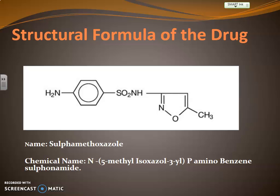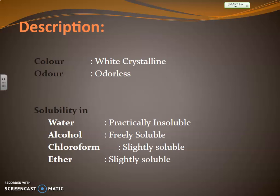The structural formula for sulfamethoxazole shows it is a sulfonamide. The basic structure contains SO2NH2 with a benzene ring and an NH2 (para-aminobenzene sulfonamide), with the substituent on the nitrogen being 5-methyl isoxazol-3-yl. The full chemical name is N-(5-methylisoxazol-3-yl) para-aminobenzene sulfonamide.